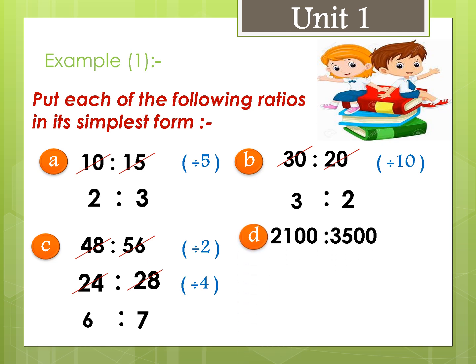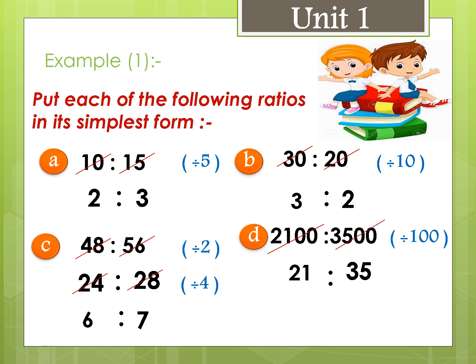Letter d: 2100 to 3500. Both are divisible by 100, so 2100 divided by 100 equals 21, and 3500 divided by 100 equals 35. Since 21 and 35 are both divisible by 7, we divide: 21 divided by 7 equals 3, and 35 divided by 7 equals 5. The ratio is 3 to 5.